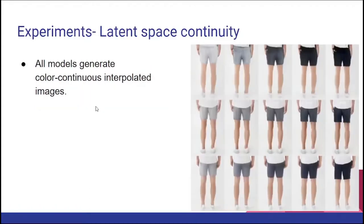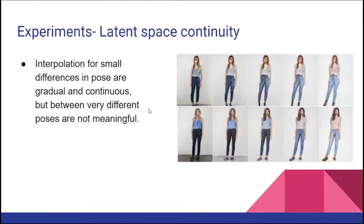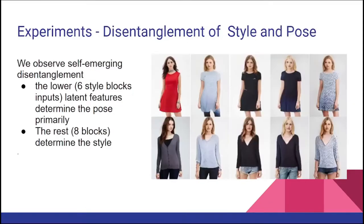The other property is color continuity. We looked at how continuous the color interpolations are and found that all trained models show color continuity. The final result is regarding pose continuity: if pose changes are very small or minor, the interpolated images are continuous. However, if the pose change is very large, the intermediate images are not as continuous.